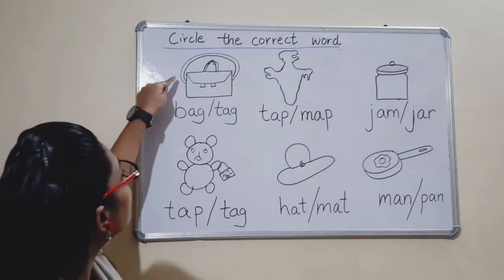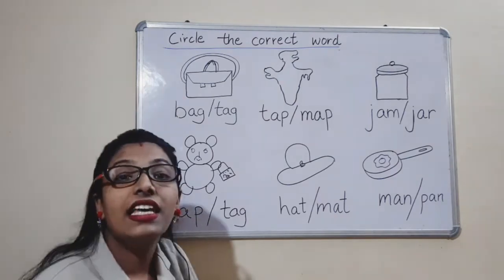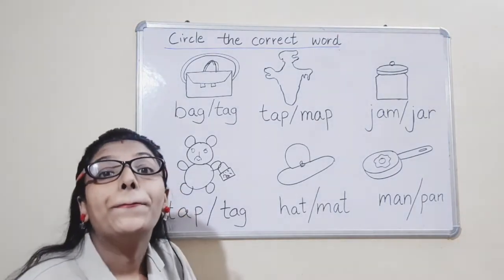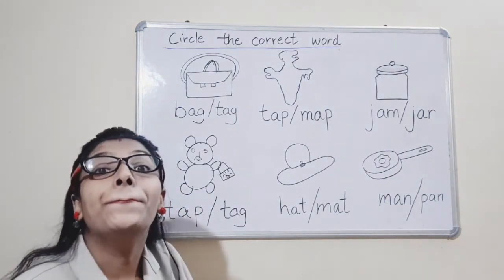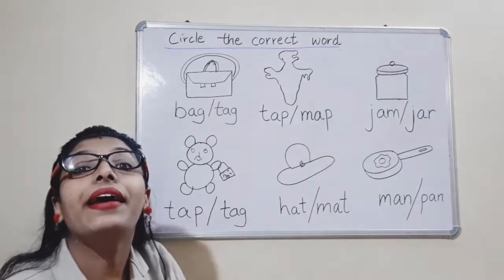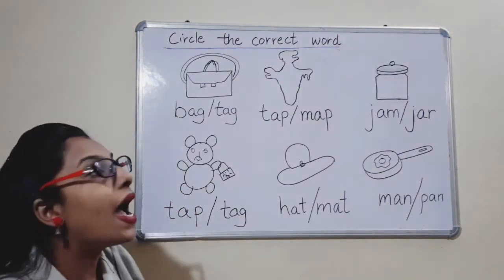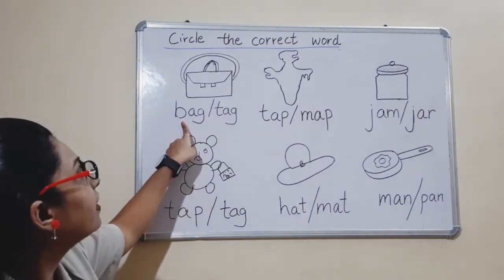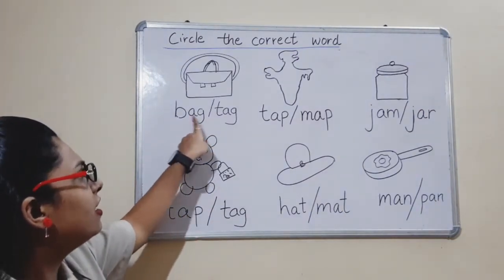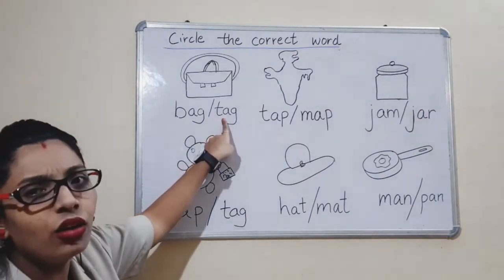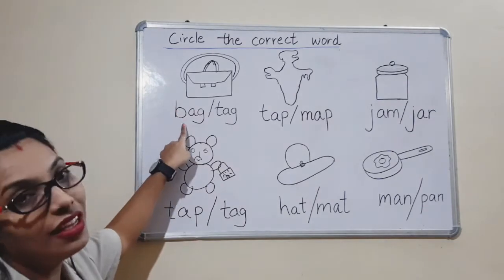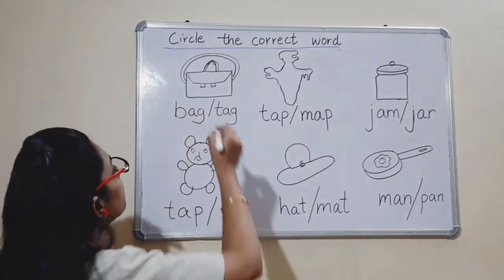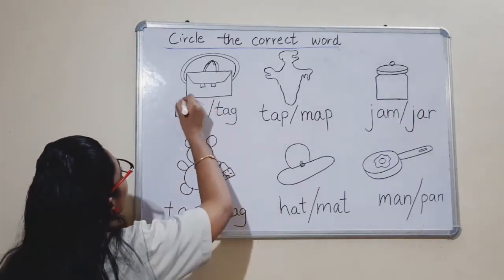Which picture is this? B-A-G — bag. Is this bag? Yes. Is the other one bag? No. So we will circle this one. Circle it.